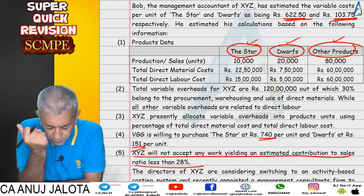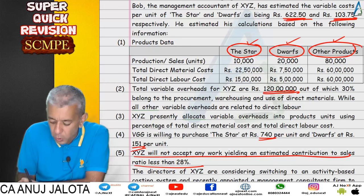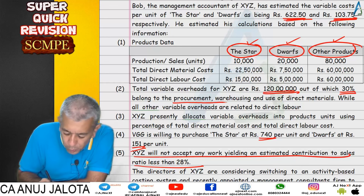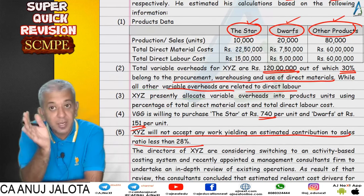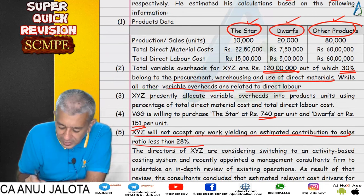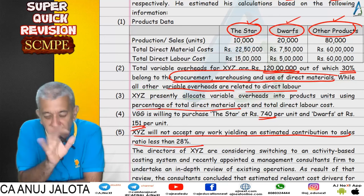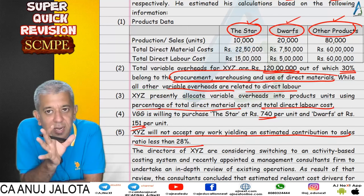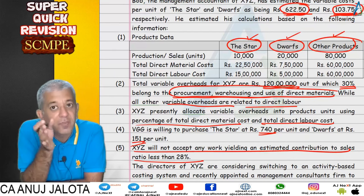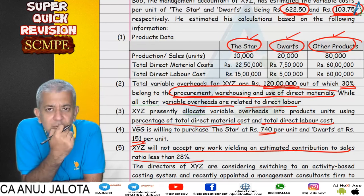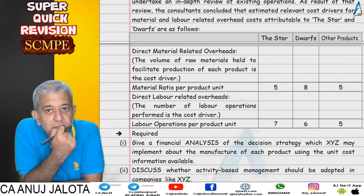Now, the total overheads were given — 30 percent belonged to procurement, warehouse, and use of materials, whereas other variable overheads related to direct labor. Under absorption costing, the 30 percent part followed the percentage of material cost method, and the other part followed the percentage of labor cost method. By doing that, the same given answers were confirmed. But absorption costing doesn't take into account cost driver information, so the problem then provided cost driver data.